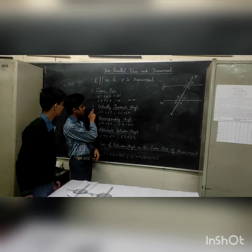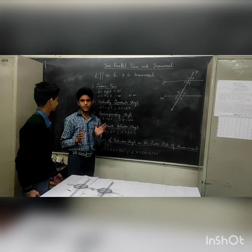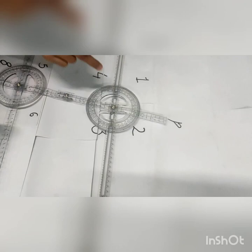Now we have another point, which is the vertically opposite angle. What is it? We can see that angle 2 and angle 4 are vertically opposite angles, and these two will be equal to each other.